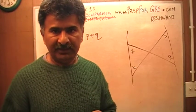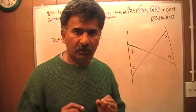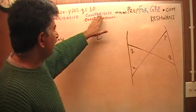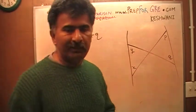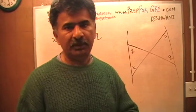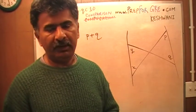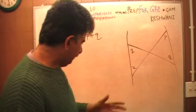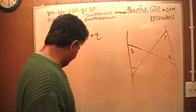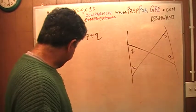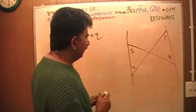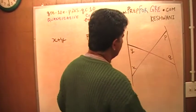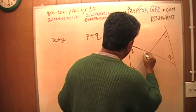As I have said many times before, these questions are called quantitative comparison. These are not called computation. Nobody is asking you to compute anything. You are being asked to compare the two things. So let's make up this angle here — let's call it angle a.